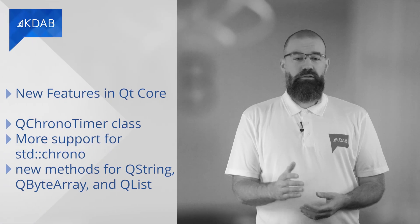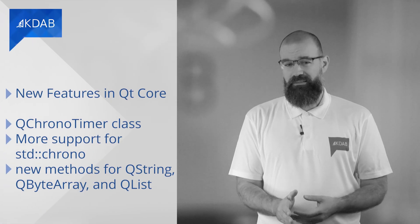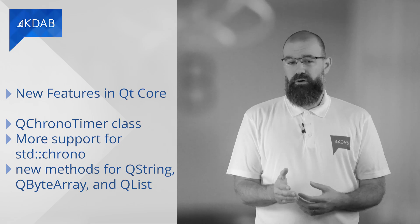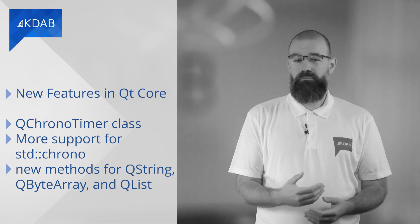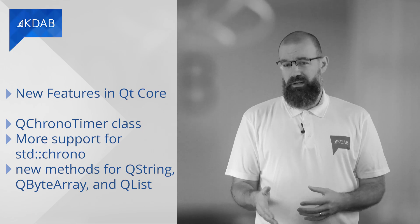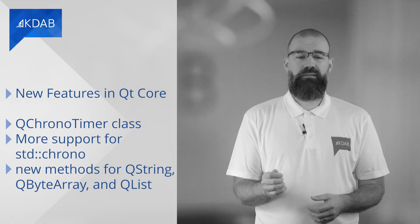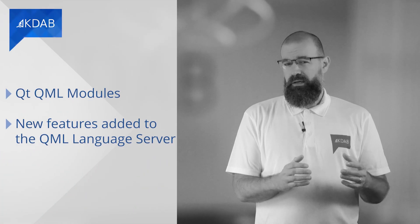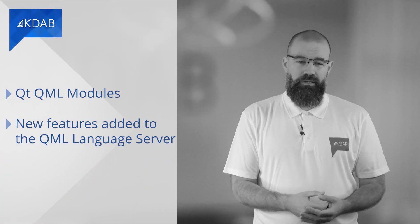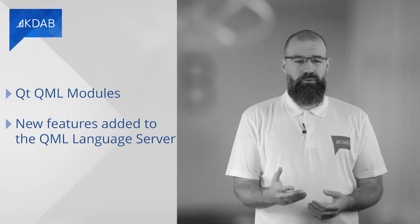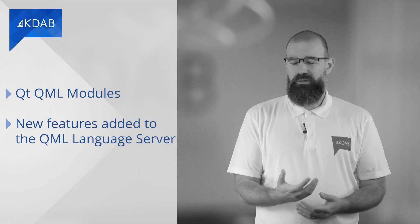New features in Qt Core include a new QChrono timer class for more precise timing, and more support for std::chrono, the C++ standard library for working with time. Additionally, new methods have been introduced for QString, QByteArray, and QList. In the Qt QML module, the QML language server gains semantic highlighting, JavaScript language support, and QML file renaming, among other improvements.